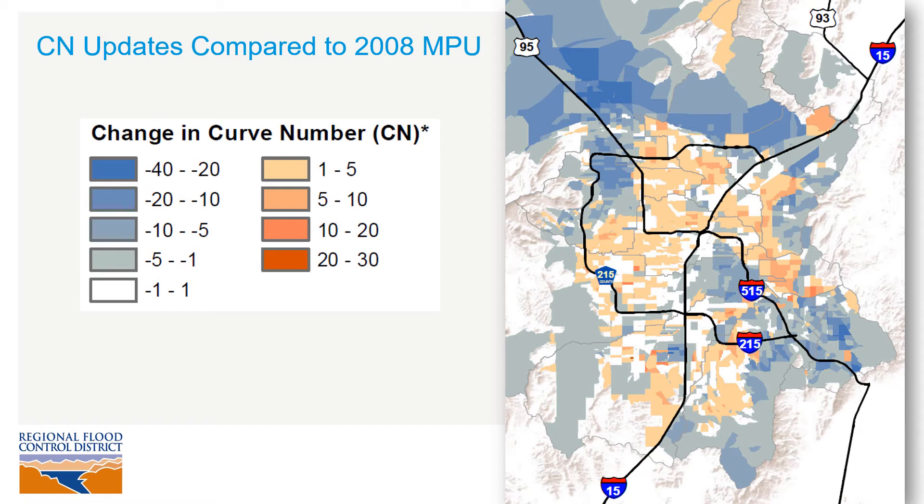The curve number changes vary across the valley and are not isolated to one location or watershed. In general, the undeveloped areas surrounding the valley decreased in curve number, and that was primarily driven by the updated soils data. In comparison, the developed areas in the central portion of the study area, and especially along the Las Vegas Wash, saw an increase in curve number — due to the updated soils data but also the land use revisions that were made.